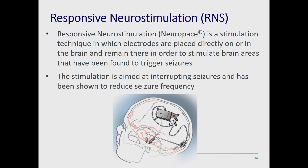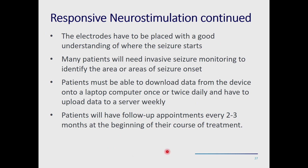The responsive neurostimulator (RNS) involves electrodes placed on or in the brain to stimulate areas found to trigger seizures. RNS stimulation is aimed at interrupting seizures and has been shown to reduce seizure frequency. Some patients become seizure-free, though it is more of a palliative treatment. Electrodes must be placed with a good understanding of where seizures start, and many but not all patients need invasive monitoring first.